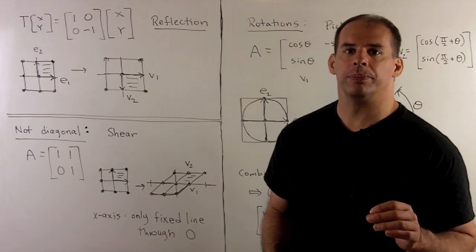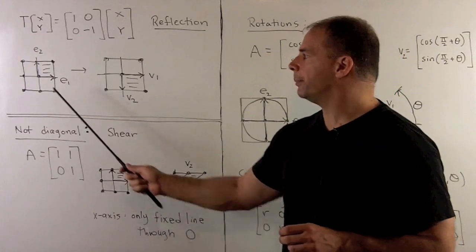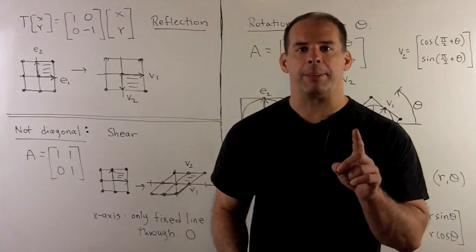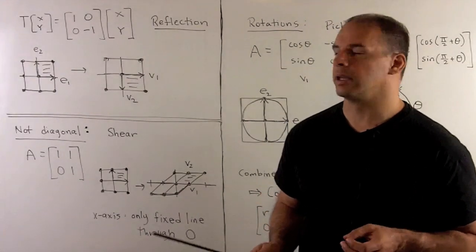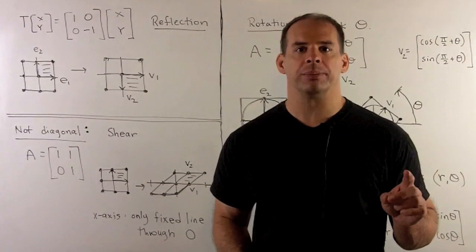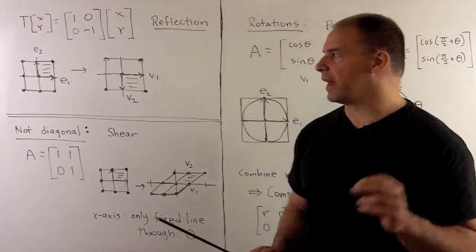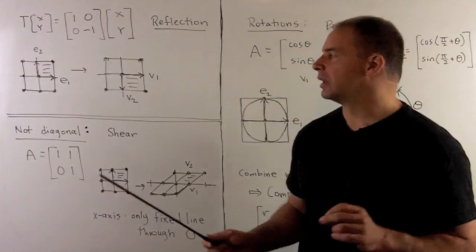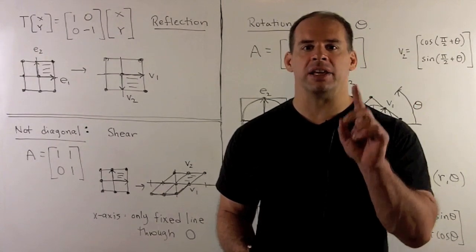Consider A equal to [1,0,0,−1]. Here E1 goes to E1 and E2 goes to minus E2. Working out the grid, we're taking the x-axis and flipping — we have a reflection. For reflections in general, we fix a line called the axis of reflection and flip across the perpendicular direction. Here the axis of reflection is the x-axis, which is fixed point-wise. The y-axis gets mapped to itself by sending each point to its negative.